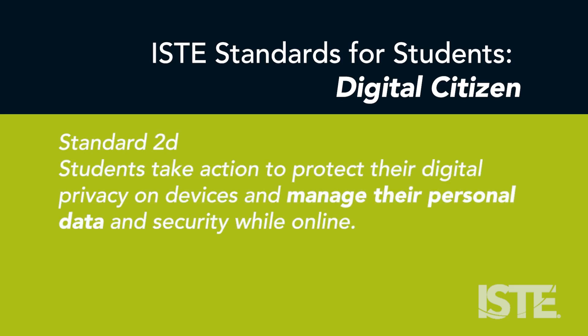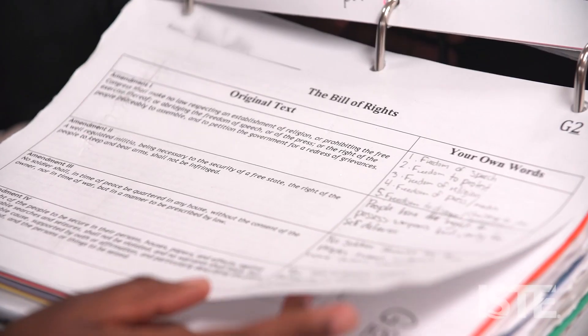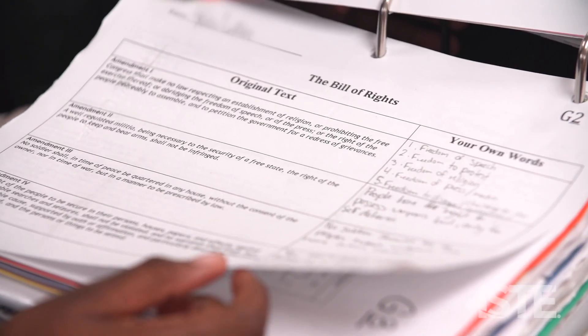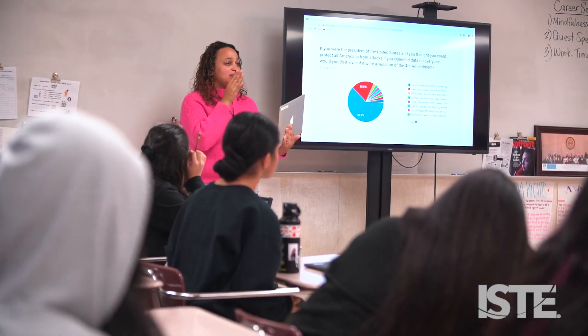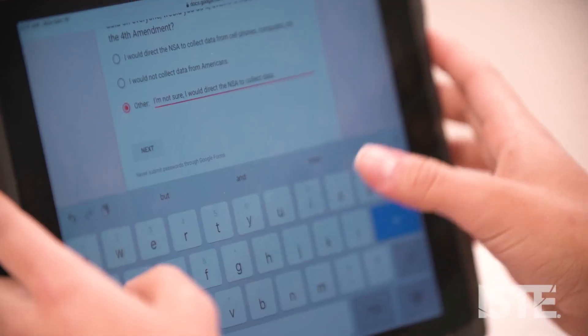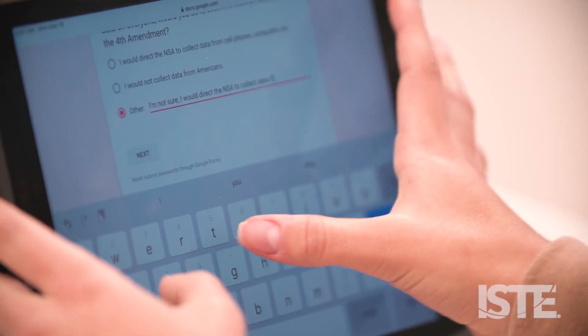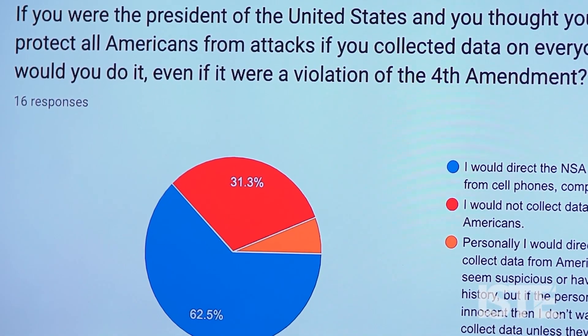Students take action to protect their digital privacy on devices and manage their personal data and security while online. We watched the Snowden documentary Citizen Four to really understand the Fourth Amendment, and we've had lots of conversations about when it gets complicated. The right of the people to be secure in their persons and effects against unreasonable searches and seizures shall not be violated.